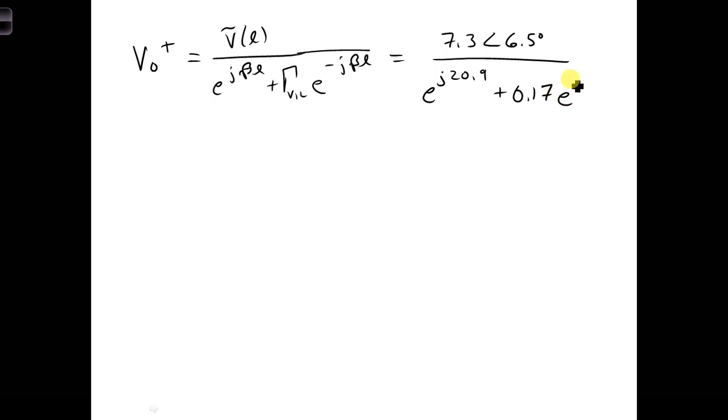Plugging everything into the expression we just had, we can solve for V naught plus. We get the total voltage phasor, which we already solved for earlier, over E to the J beta L, plus the reflection coefficient times E to the minus J beta L. We can plug in values here now. We have 7.3 at an angle of 6.5 degrees, and E to the J 20.9, and our reflection coefficient 0.17 E to the minus J 20.9. If we put all that together, we're going to get 6.2 at an angle of 69 degrees.